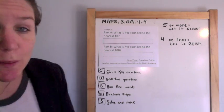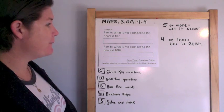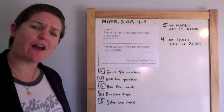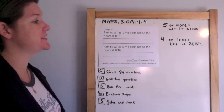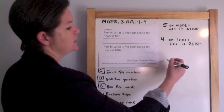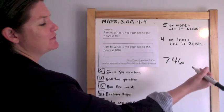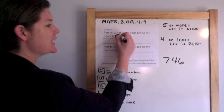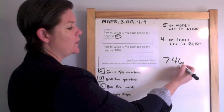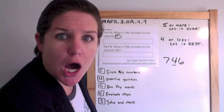This is a two-part equation editor response. Part A: What is 746 rounded to the nearest ten? So I need to find the tens place. This is the ones place, this is the tens place. Underline it.